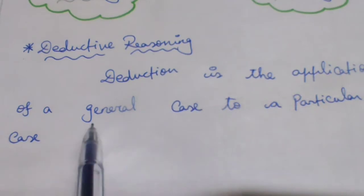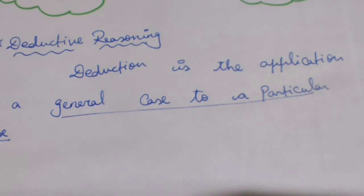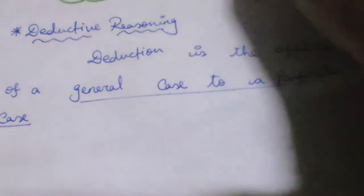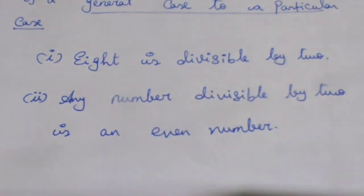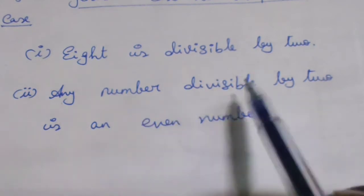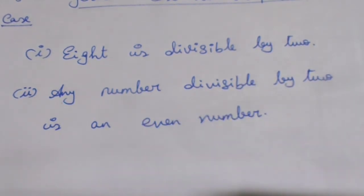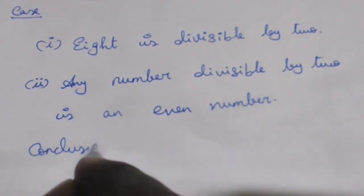We will talk about deductive reasoning. If we look at an example, we consider two statements: first, 8 is divisible by 2. Second, any number divisible by 2 is an even number. From these two statements we will draw one conclusion.